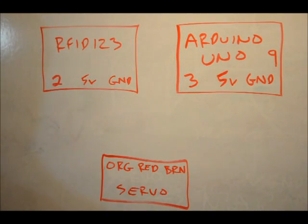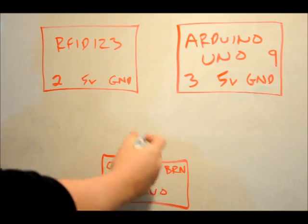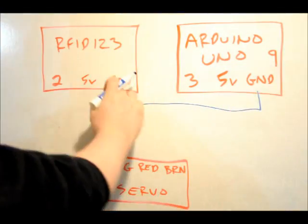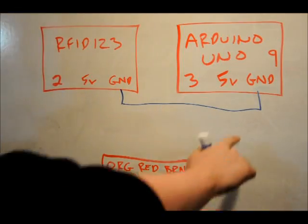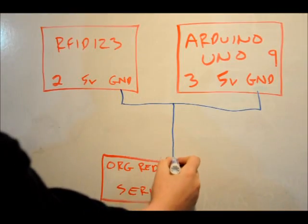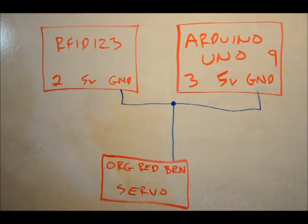So the first thing we want to do is we want to connect all of our grounds together. Now the Arduino Uno has two ground pins. So you can connect one ground pin from the Arduino Uno to the ground line, the ground pin, single ground pin on the RFID123. And take another ground pin and connect to the brown wire on the servo motor. So now we've got all grounds connected.